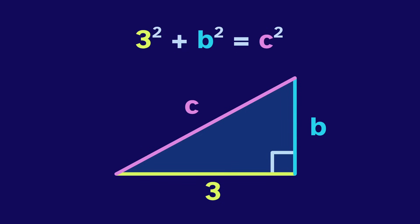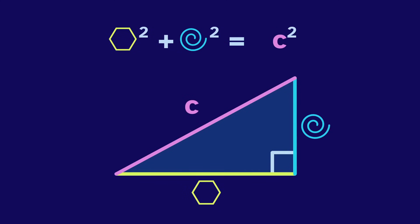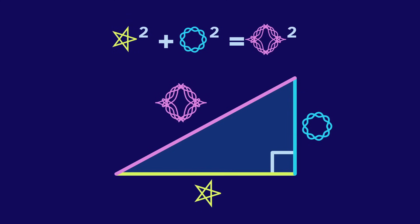If A is 3 and B is 4, then C must be 5. But if A is a hexagon and B is a spiral, then C is this weird shape. And we can change those input sides to get other cool results.